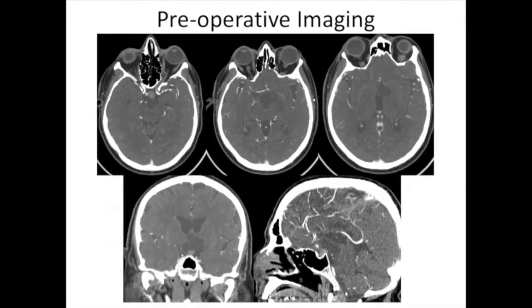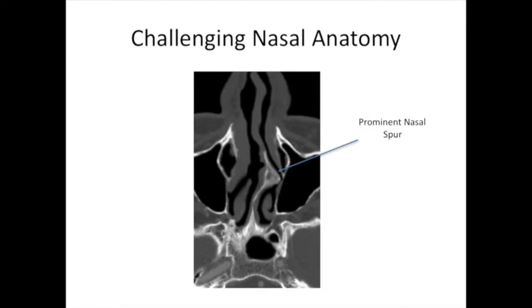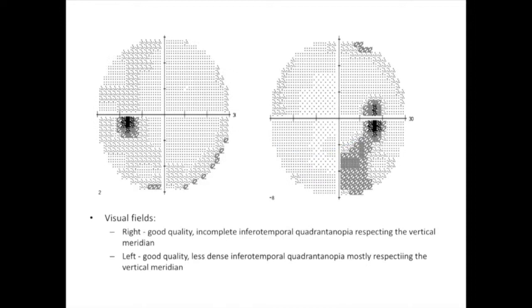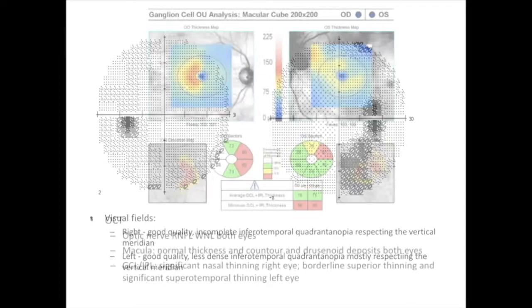He was not able to get an MRI, unfortunately, because of shrapnel from Vietnam service. His preoperative CT scan shows a sellar and suprasellar lesion extending up toward the floor of the third ventricle, displacing the chiasm anteriorly. He also had challenging nasal anatomy with a significant prominent nasal spur in the septum. Visual field testing showed an incomplete bitemporal quadrantanopsia on the right side and a mild one on the left, consistent with his OCT, which shows significant nasal thinning on the right eye.